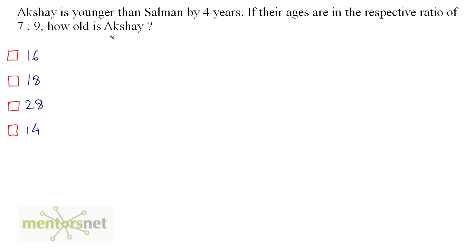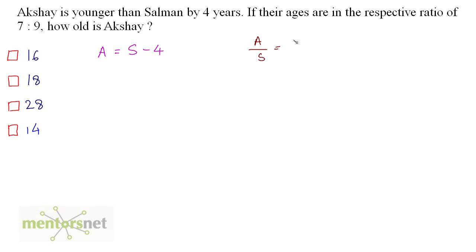We have been given that Akshay is younger than Salman by 4 years. If the age of Akshay is A, we can say that it is equal to Salman's age S minus 4. Now, if their ages are in the respective ratio of 7 is to 9, so A by S is equal to 7 by 9.